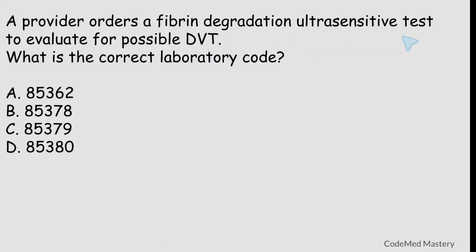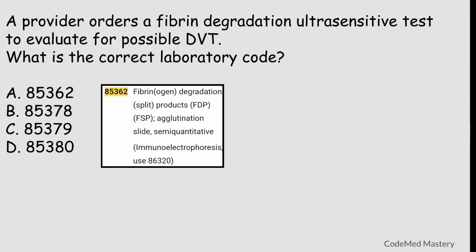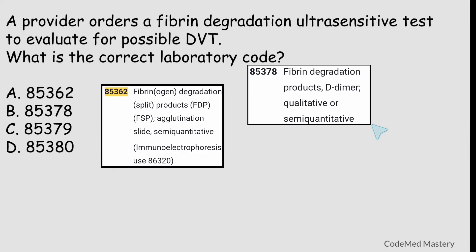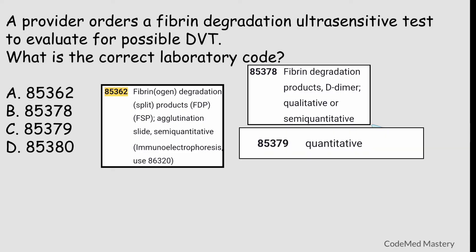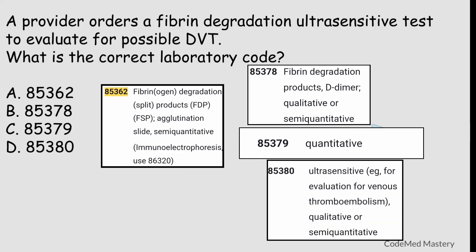Let us solve another question. A provider orders a fibrin degradation ultra-sensitive test to evaluate for possible DVT. What is the correct laboratory code? Option A is 85362 — fibrinogen degradation split products, agglutination slide, semi-quantitative. Option B is 85378 — fibrin degradation products D-dimer, qualitative or semi-quantitative. Option C is 85379 — fibrin degradation products D-dimer, quantitative. Option D is 85380 — fibrin degradation products, ultra-sensitive, qualitative or semi-quantitative. The scenario specifies ultra-sensitive, so the matching code is 85380.